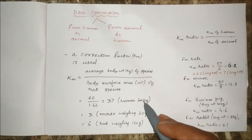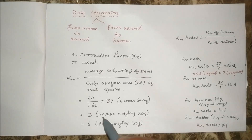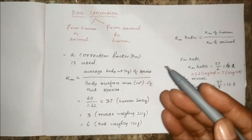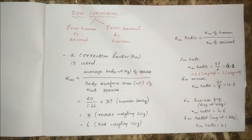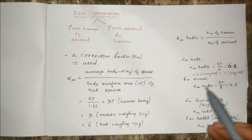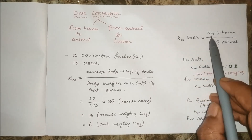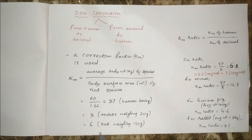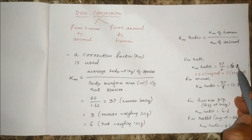So 60 divided by 1.62 gives a KM of 37 for human beings. Similarly, for a 20-gram mouse, KM will be 3. For a rat weighing 150 grams, KM is 6. So if we are doing an experiment where the average weight of the rats is 150 grams, then we can use this KM value of 6. Note that with a change in body weight, the KM ratio also changes.